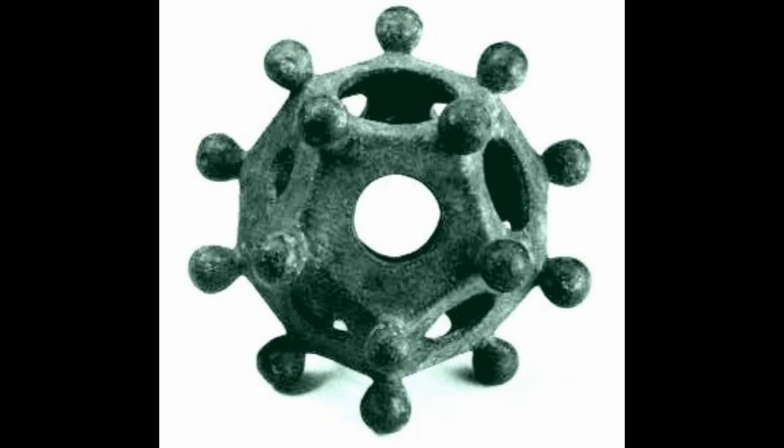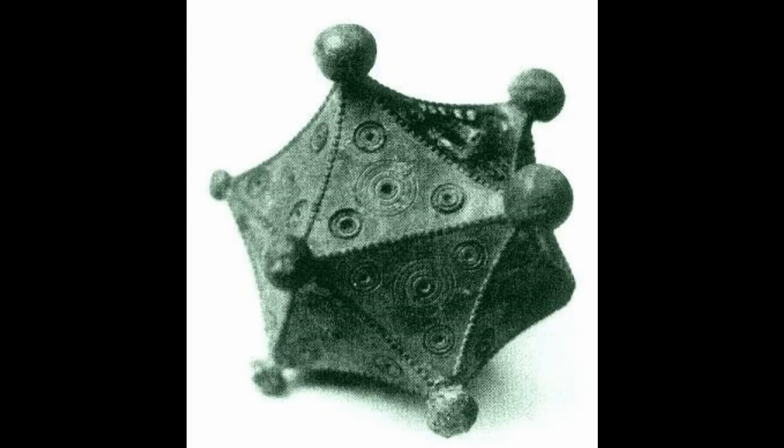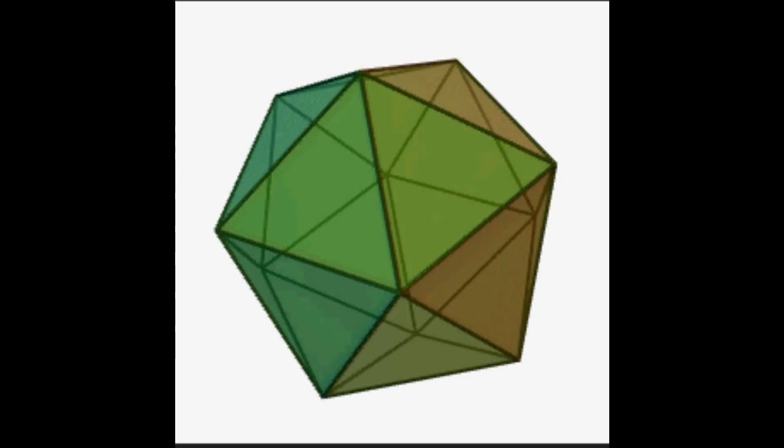Beginning in the 1st century AD, men made bronze dodecahedrons — a 12-sided polyhedron made from pentagons. They also made a 20-sided icosahedron, which is the foundation shape for the geodesic dome.